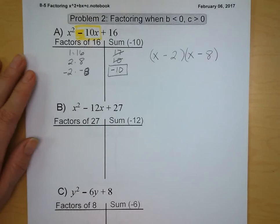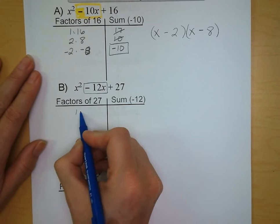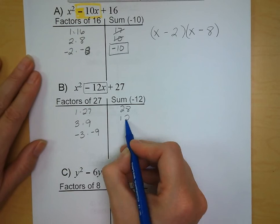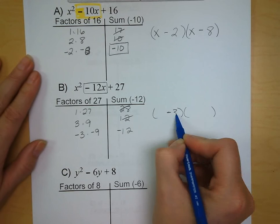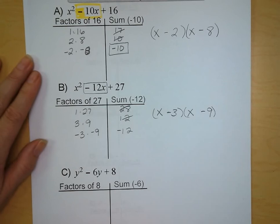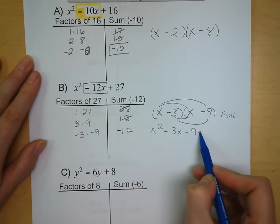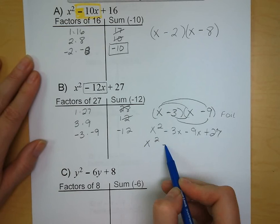Our second example: x squared minus 12x plus 27. Factors to consider: 1 and 27, 3 and 9, and negative 3 and negative 9. We see that negative 3 and negative 9 are the ones we're looking for — they add up to negative 12. To verify with FOIL: x times x is x squared, minus 3x, minus 9x, plus 27. Combining like terms gives x squared minus 12x plus 27, which matches our original.